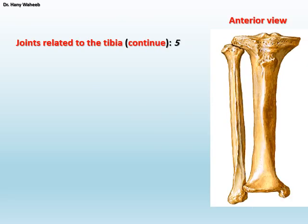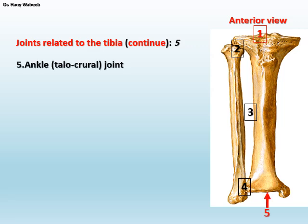To summarize the joints related to the tibia: 1. Knee joint; 2. Superior or proximal tibiofibular joint; 3. Middle tibiofibular joint, formed by the interosseous membrane of the leg; 4. Inferior or distal tibiofibular joint. The fifth joint, number five, is the ankle or talocrural joint, related to the inferior articular surface of the lower end of the tibia. The ankle joint is a hinge synovial joint.